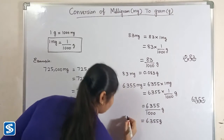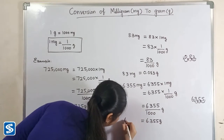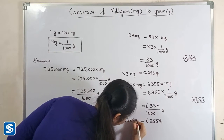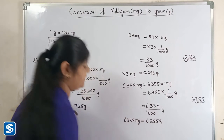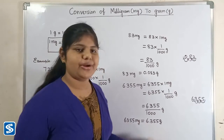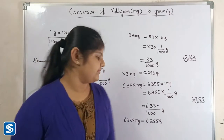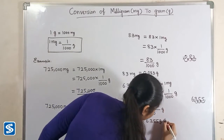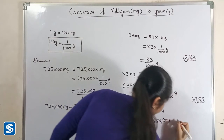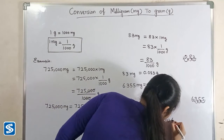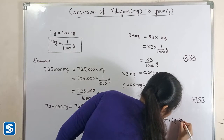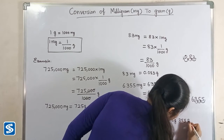So 6,355 milligrams is equal to 6.355 grams, or six grams and 355 milligrams.